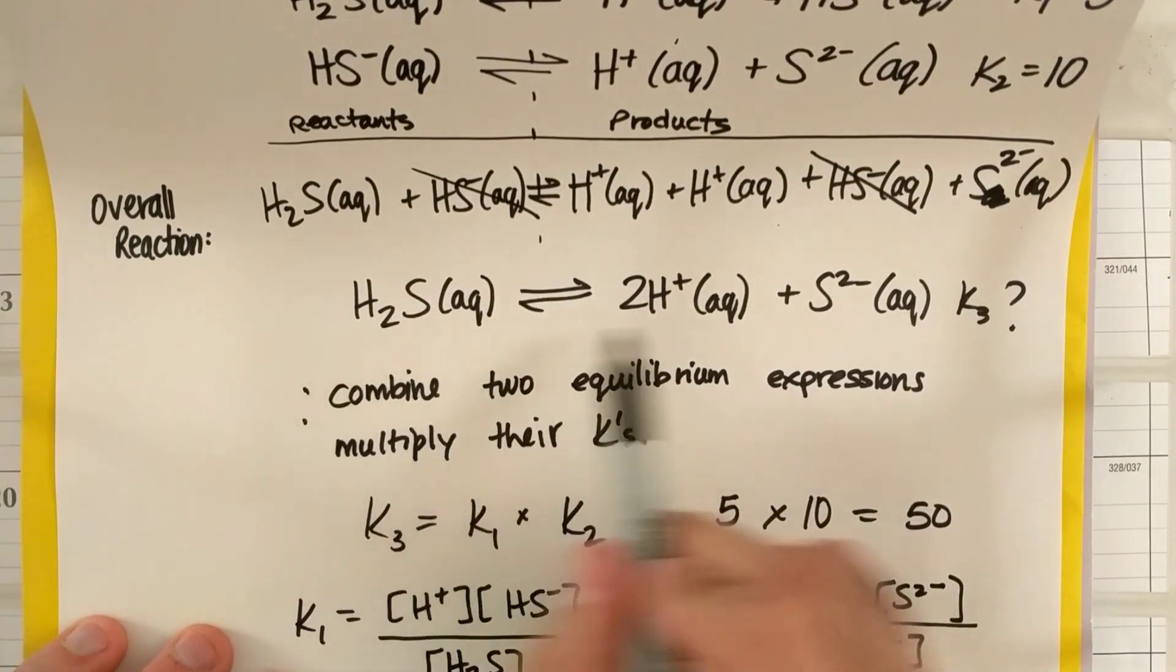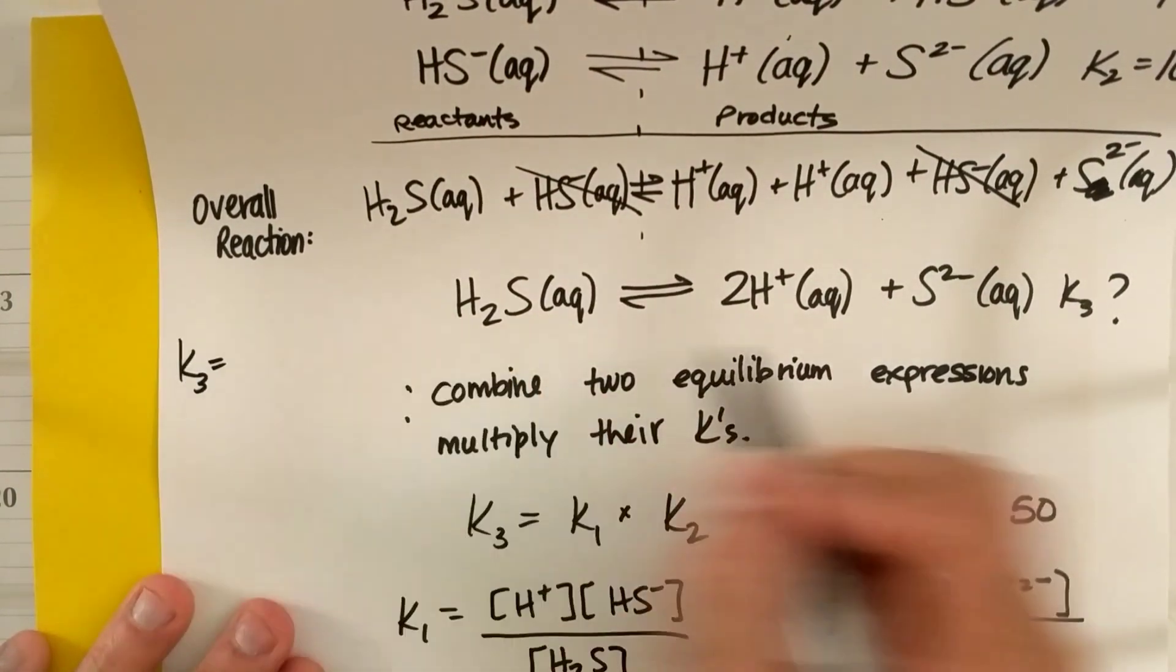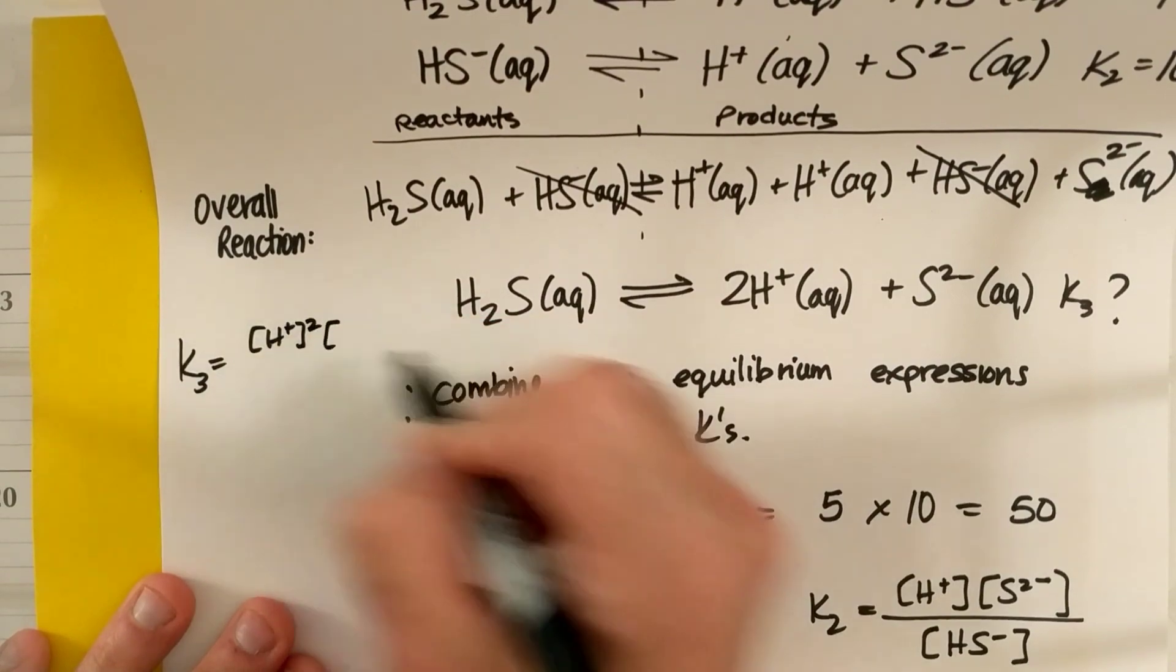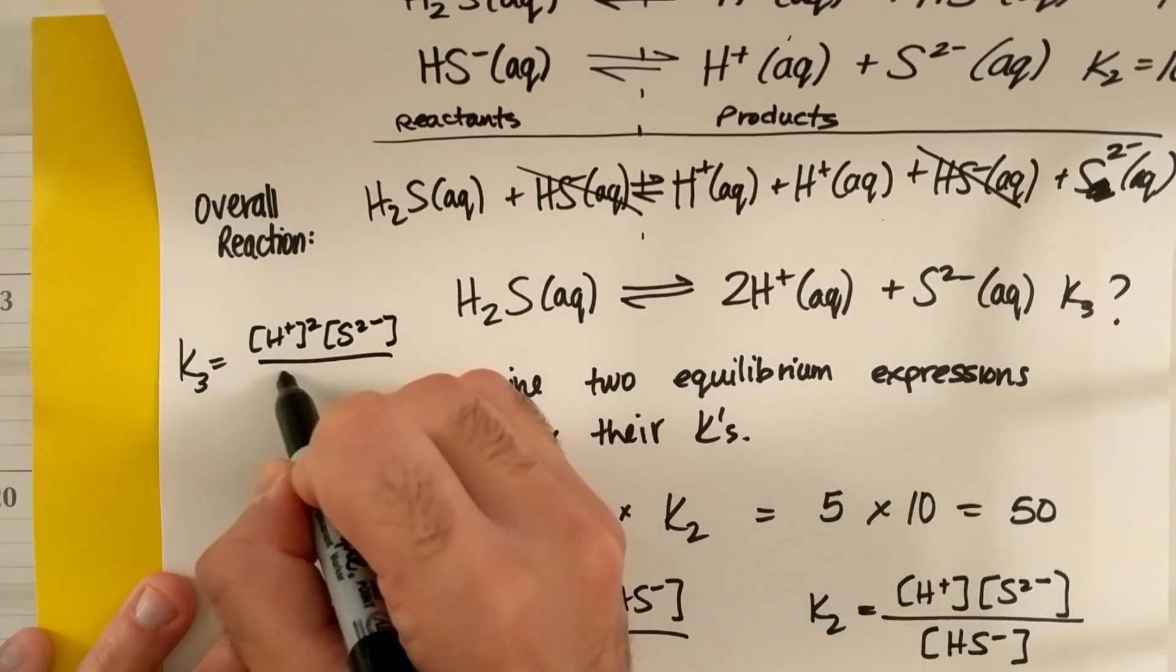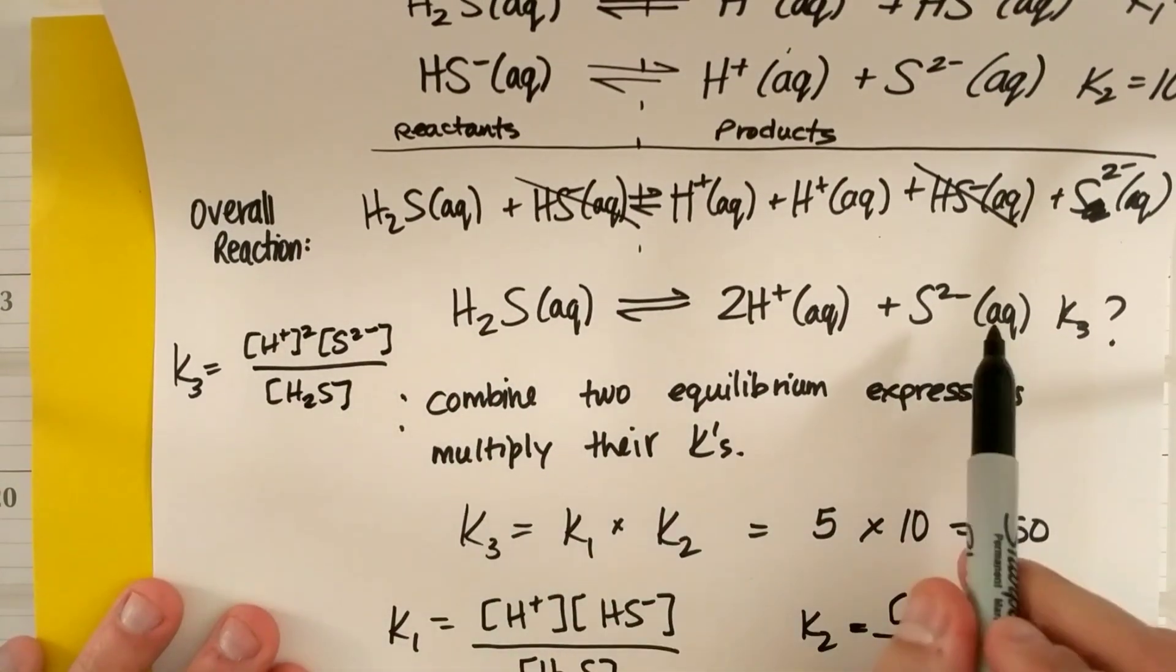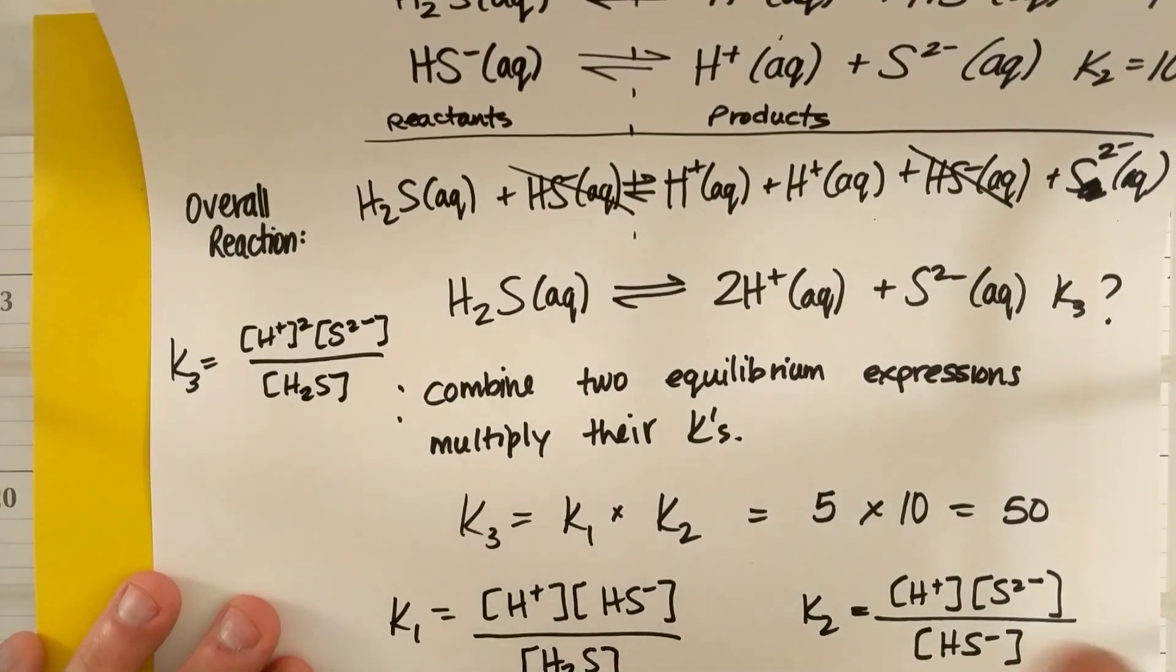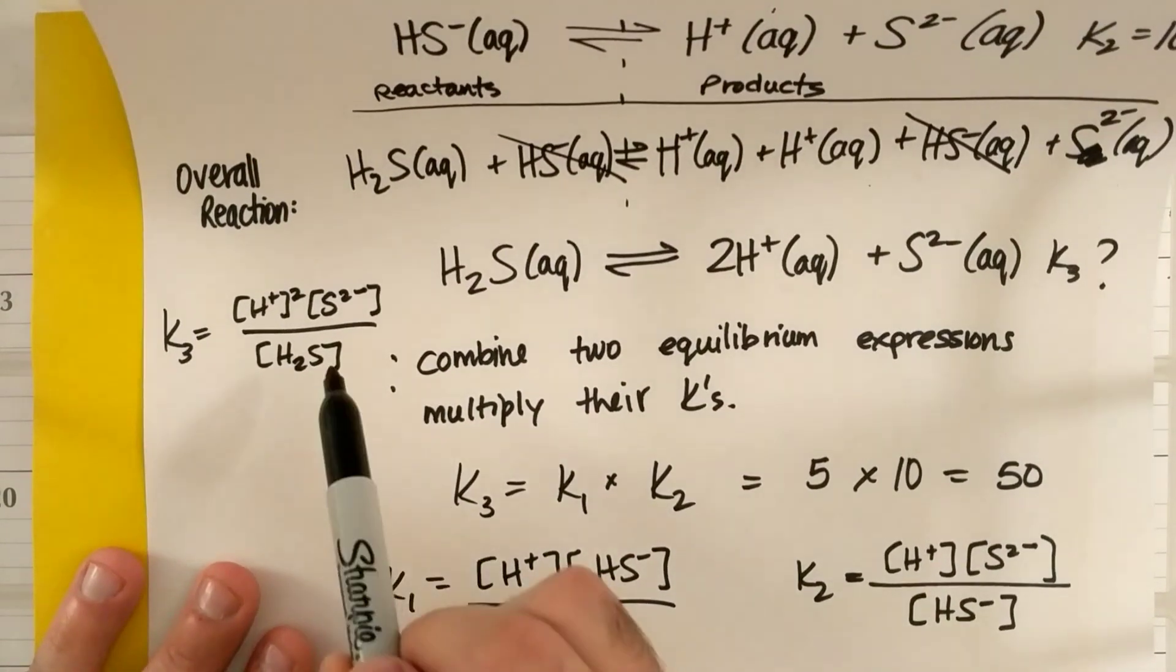And then this K3, so we can see where this compares, K3 would be concentration of H plus squared, concentration of S2 minus, over the concentration of H2S. Notice how in this reaction, I don't need HS minus. And so the harder and more explanation of why I'm multiplying these two expressions together is, what do I got to do with these two expressions to make it look like this one?